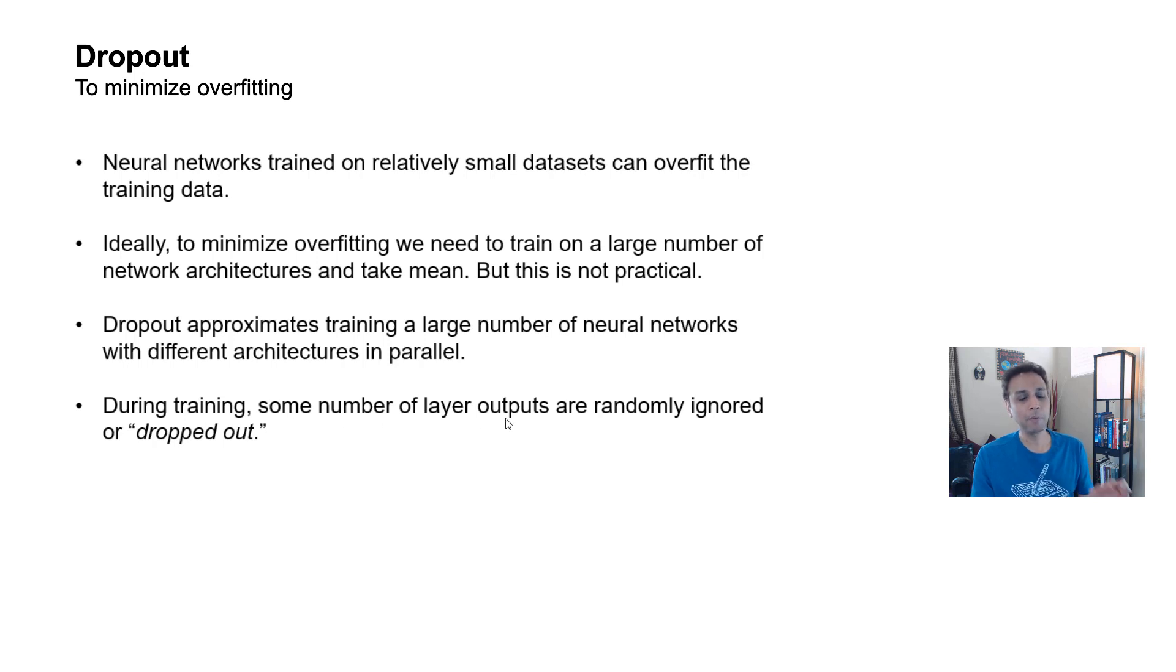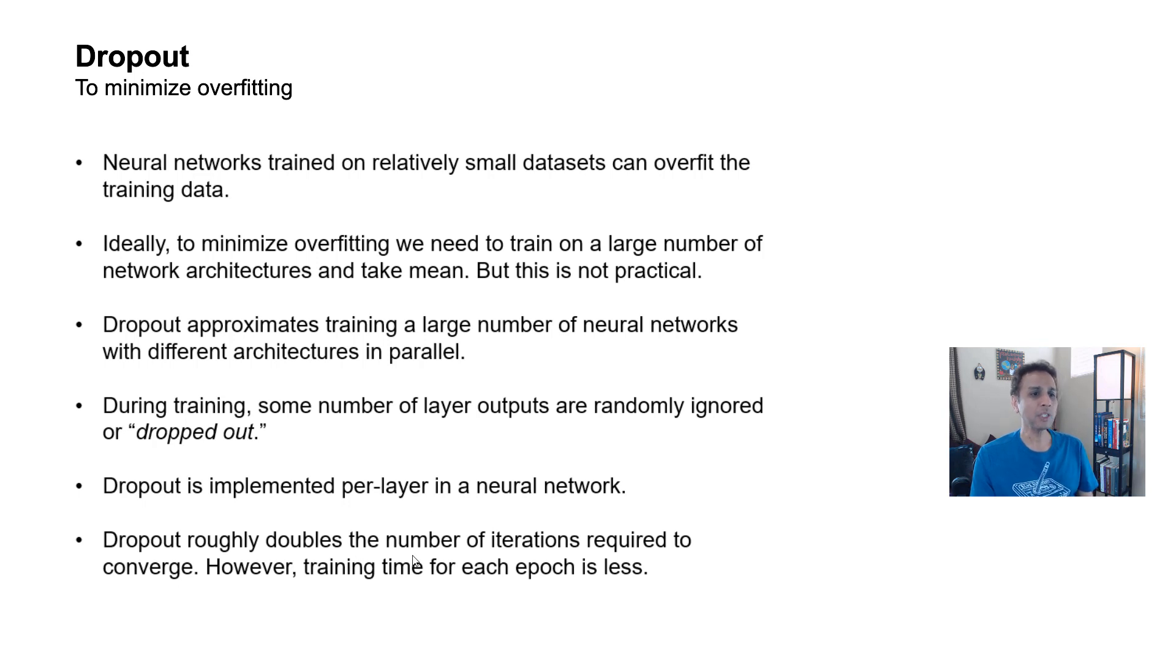During training, some number of layer outputs are randomly ignored or dropped out. I'll visually show you what that means in a second. Dropout is implemented per layer in neural network. So, if you define a convolutional layer, you can add dropout, and then another layer dropout, and so on.